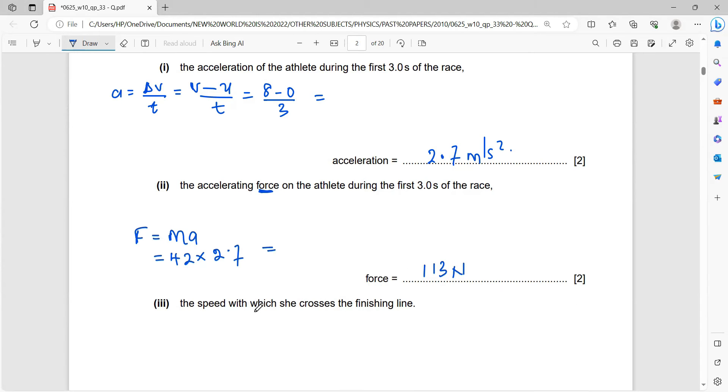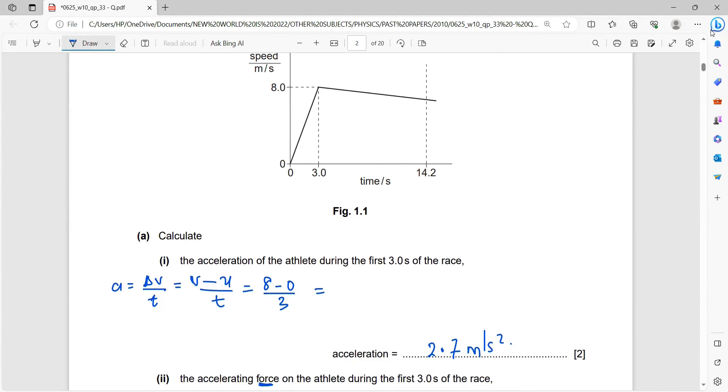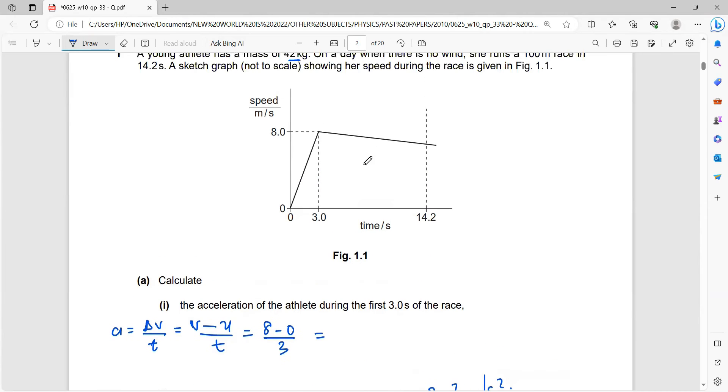And now the speed with which she crosses the finishing line. This is a bit technical. Looking at this graph, what you're asked to calculate is this portion of your graph. So you can call this your V1, your V2. Taking into consideration that this is your U. So this is one of the speeds, the top speed, and this is the finishing speed. So this is the top speed, and this is the finishing speed.